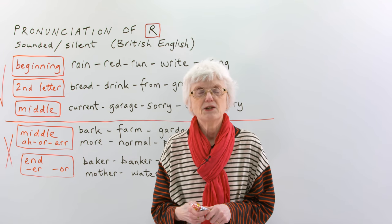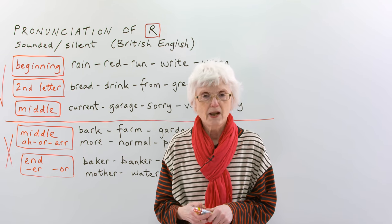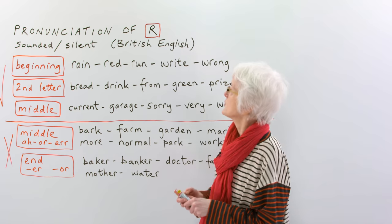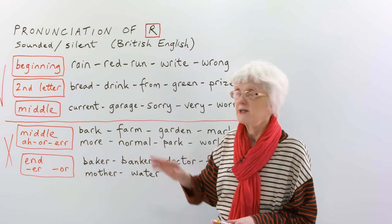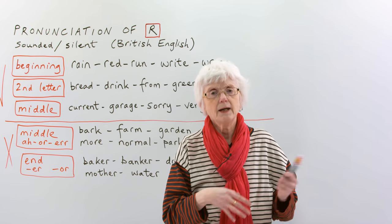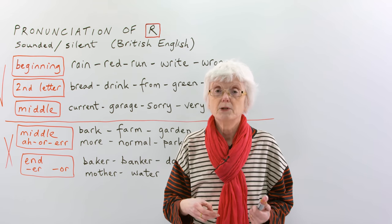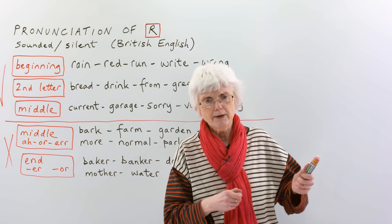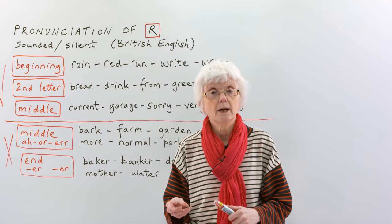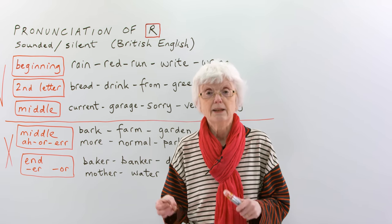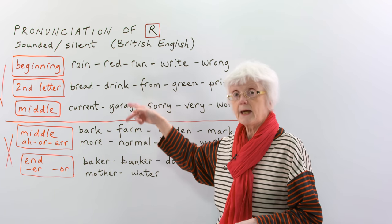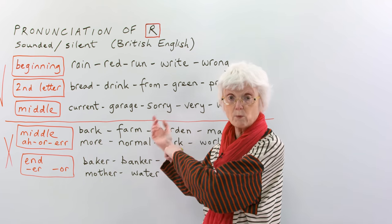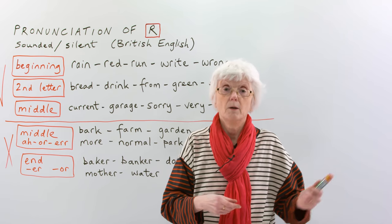Hello, I'm Gill at www.engvid.com, and today's lesson is on the pronunciation of the letter R. This is British English pronunciation. In American and Canadian English, it's sometimes a little different — the R is pronounced in American and Canadian where it's not pronounced in British English. I'm showing here the British English pronunciations, and I'll mention when we come to it where it differs from American and Canadian.